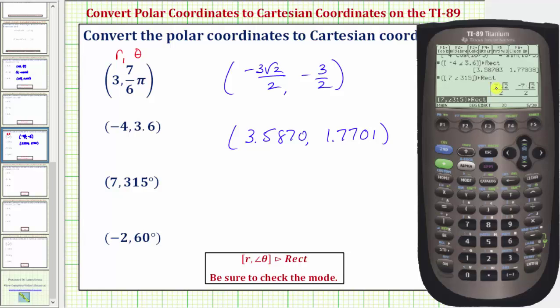The exact Cartesian coordinates are seven square root of two divided by two, comma, negative seven square root of two divided by two.